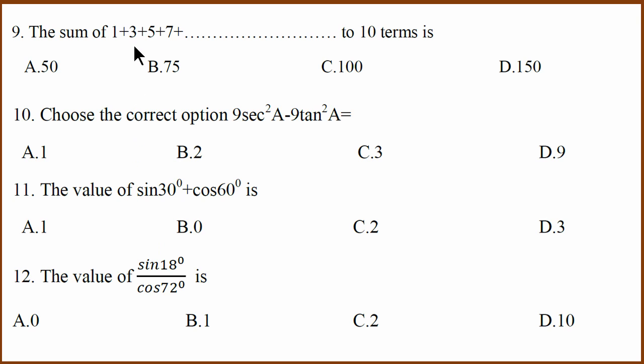Sum of odd numbers up to 10 terms. Odd number formula is n square. Sum of first n odd numbers is n square formula. It is 10 square, which is 100.